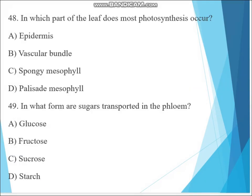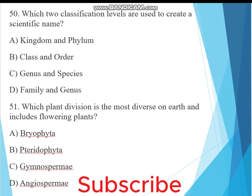Question 48. In which part of the leaf does most photosynthesis occur? A. Epidermis, B. Vascular bundle, C. Spongy mesophyll, D. Palisade mesophyll. The answer must be D, palisade mesophyll.